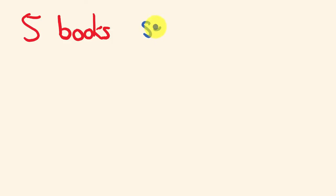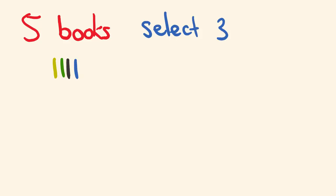The first thing I want to address is how combinations differ from permutations — with combinations, order doesn't matter. For example, say I had five different books and I was going to select three of them to take on holiday. I've got a green book, a dark green book, a black book, a blue book, and a red book. From these five books I'm going to select three, but it doesn't matter what order I grab them — I'm just going to chuck them in a suitcase.